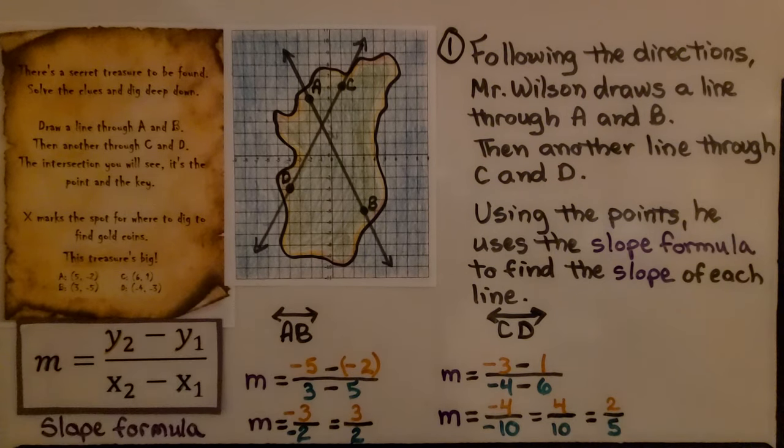For line CD, the slope would be the second y minus the first y, so it would be negative 5 minus 2, and the second x minus the first x, so 3 minus 5. That's going to give us a slope of 3 halves. For line CD, we would have a slope of 2 fifths.